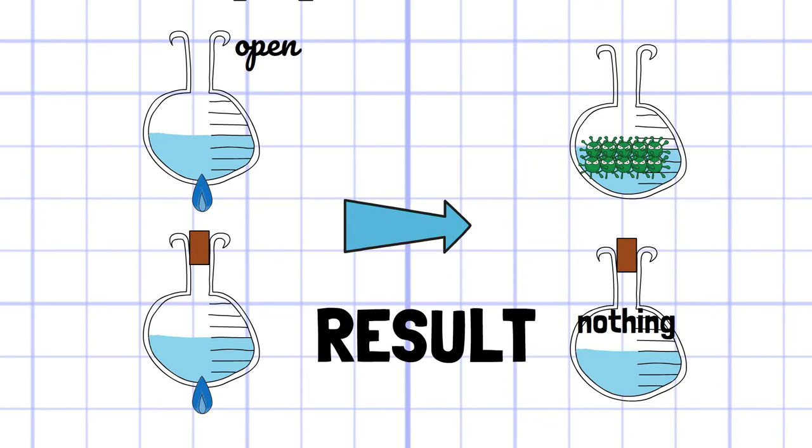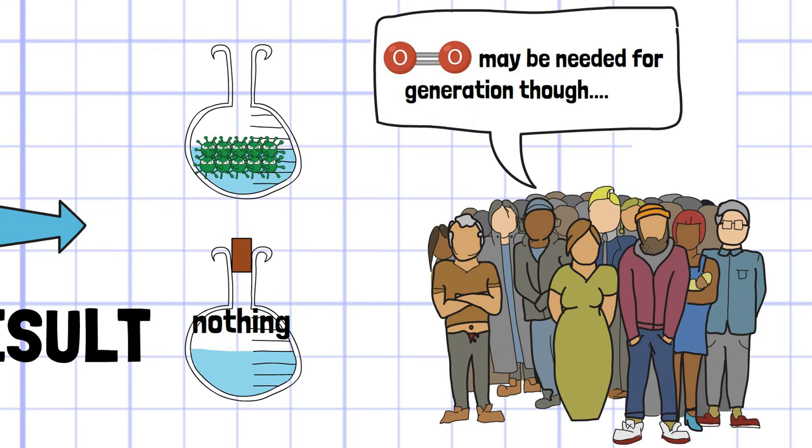However, due to the opposition based on the hypothesis that oxygen is required to the formation of new life, this experiment couldn't achieve the falsification of spontaneous generation.